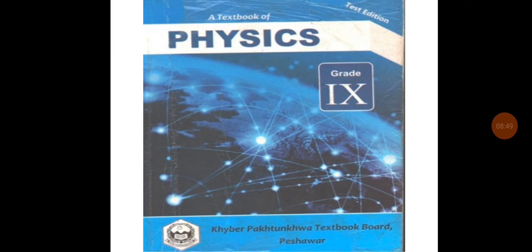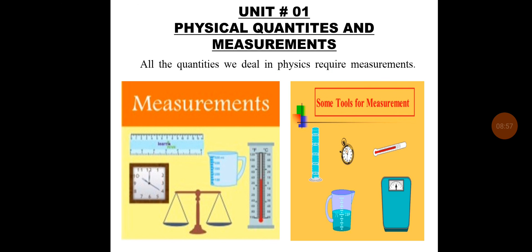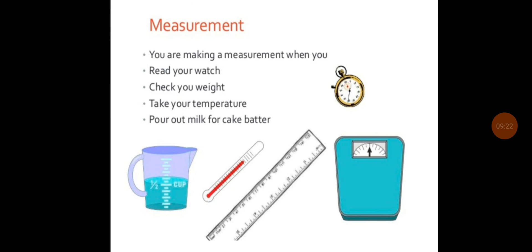It's your book of Physics for grade 9. Let's start Unit number 1 which name is physical quantities and measurement. All the quantities we deal in physics require measurements because without measurement, nothing is possible. Measurement is not only a key concern in physics. In our daily life, we are always making measurements. For example, read your watch, you are making a measurement. When you check your weight, when you take your temperature, when you pour out milk for cake batter, or even when you go to the tailor shop before sewing our clothes, he takes the required measurements. Measurements have a wider role in our daily life.